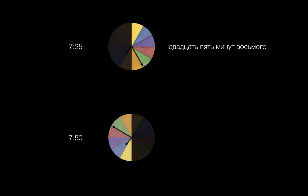Remember, this system is used only for the first half hour, when the minute hand is anywhere from 1 through 30. To say 7:50, or any time when the minute hand points from 31 to 59, we'll use a different system that we'll cover in another video.